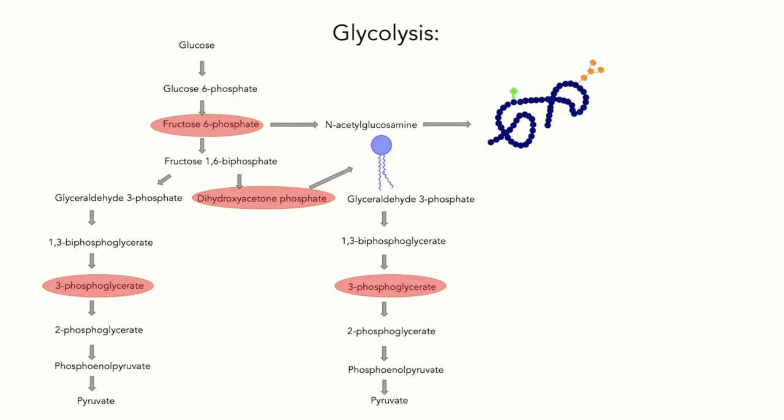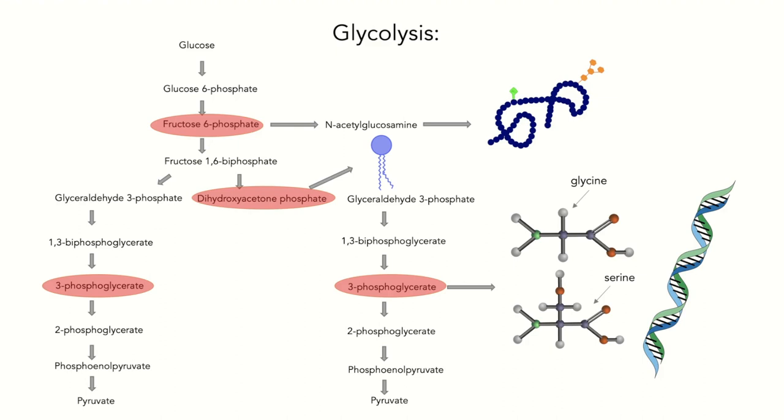3-phosphoglycerate could be converted into the amino acids glycine and serine, as well as coenzymes required for nucleotide synthesis, all important molecules for cell growth and proliferation. So well, so good. But how do cancer cells do it? How do they switch to aerobic glycolysis?